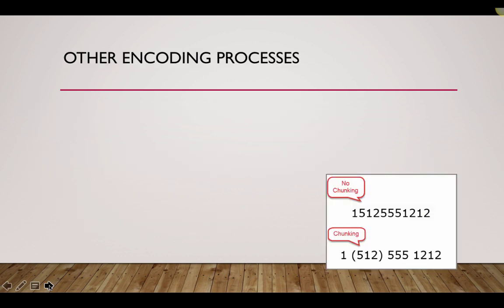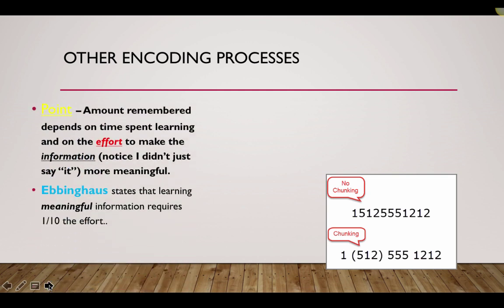So that's just about it. We have one more process to cover, so hang in there. Remember an important point. The amount remembered depends on the time spent learning and on the effort to make the information meaningful. Notice I didn't just say it. I said the word information to help you encode. Ebbinghaus, remember the grandfather of memory, states that learning meaningful information requires about one-tenth the effort. So you might guess that two types of encoding also are better than one. So if you can visually encode something with imagery and semantically encode something with meaning, you're going to remember that information better.